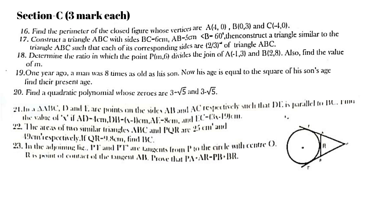The areas of two similar triangles ABC and PQR are 25 cm² and 49 cm² respectively; if QR = 9 cm, find BC. In the adjoining figure, PT and PT' are tangents from P to the circle with center O; R is a point of contact of tangent AB. Prove that PA = AR − PB + BR.